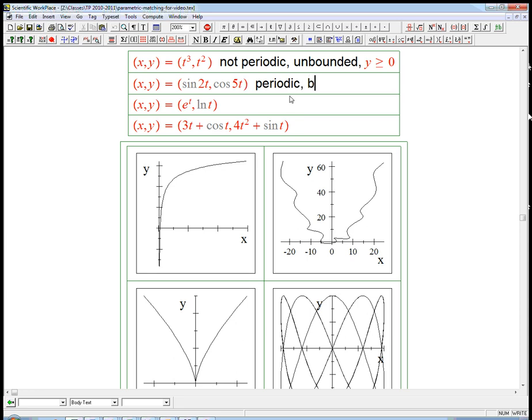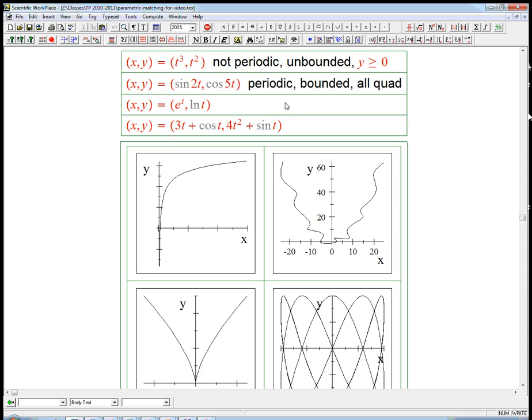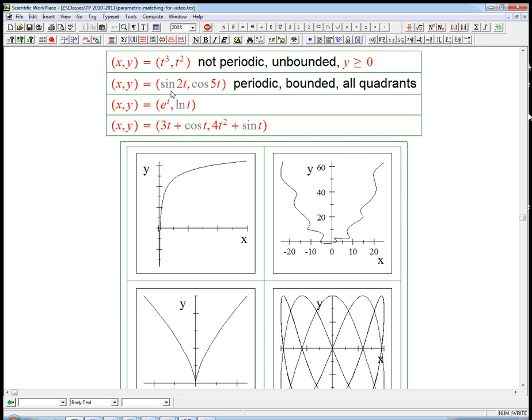It's definitely bounded because sine is between minus 1 and 1, and cosine is between minus 1 and 1. But we get all sine combinations, so all quadrants. It's going to show up in all quadrants because it's pretty easy for these guys to be both plus plus or minus minus, etc.